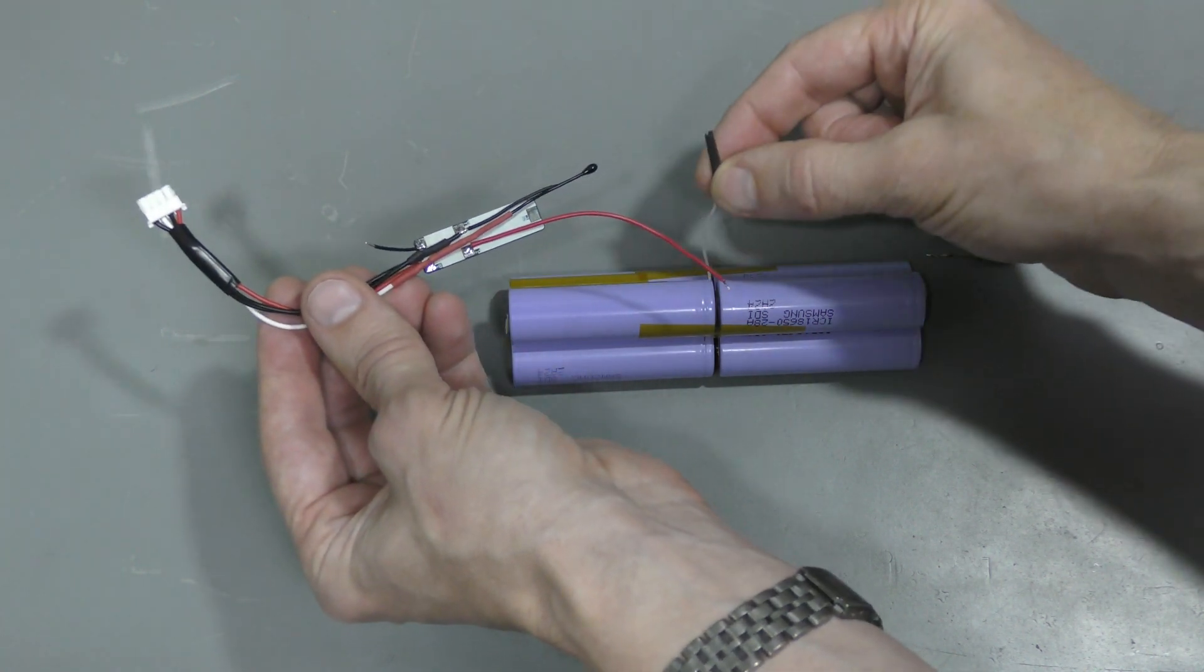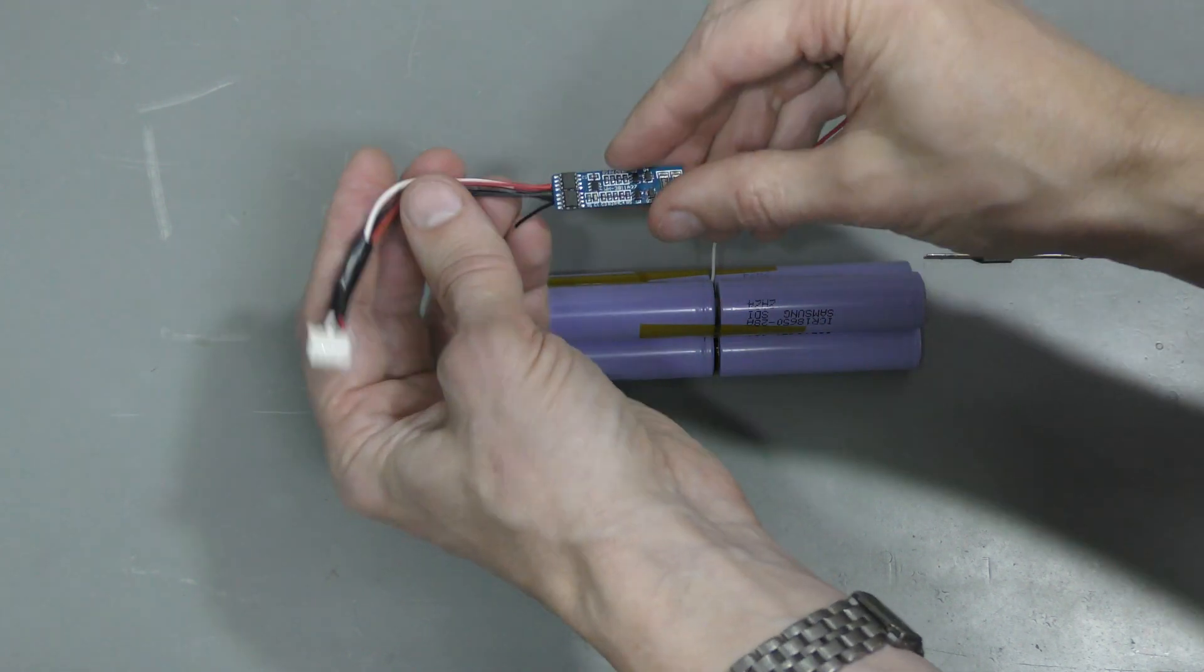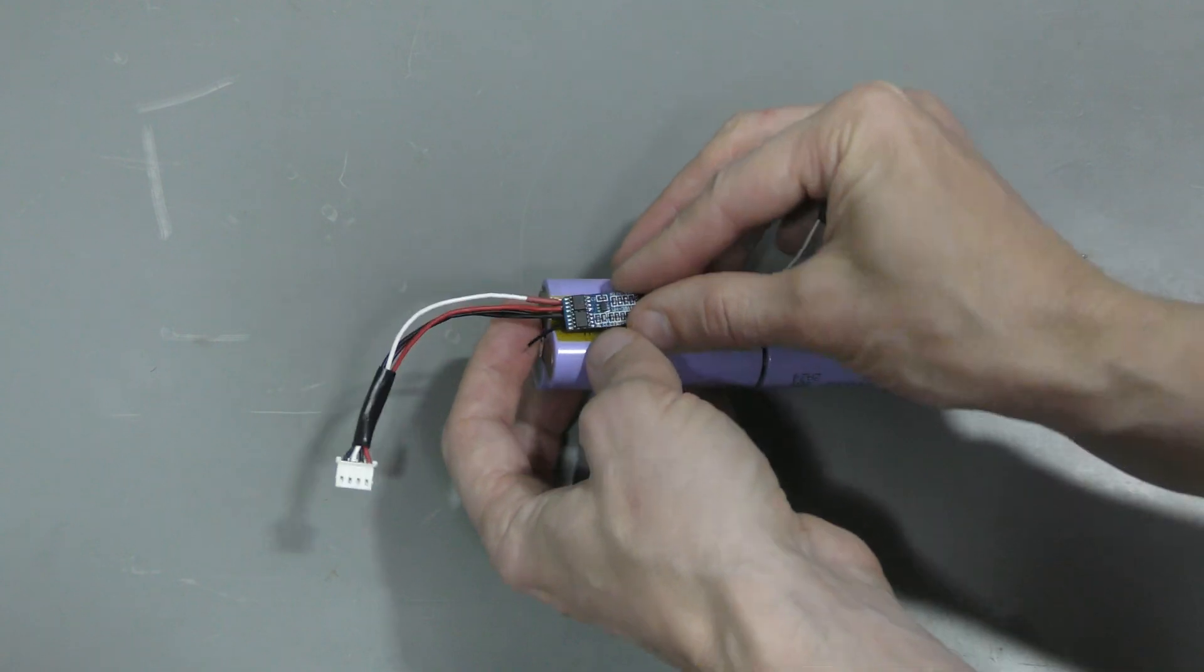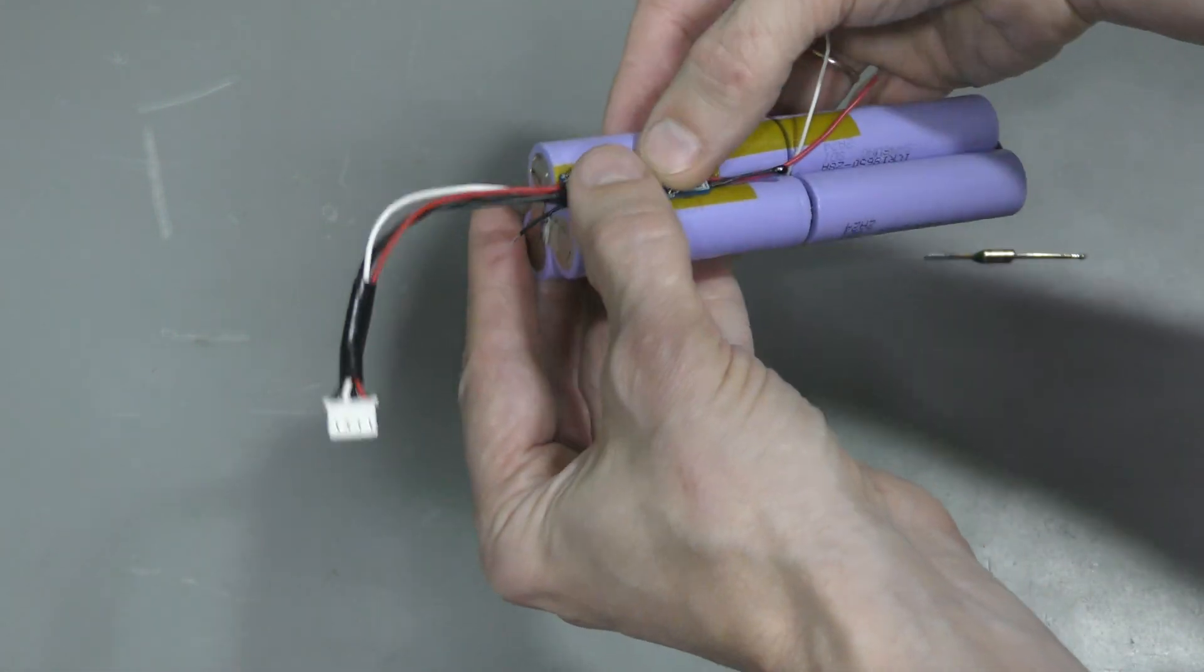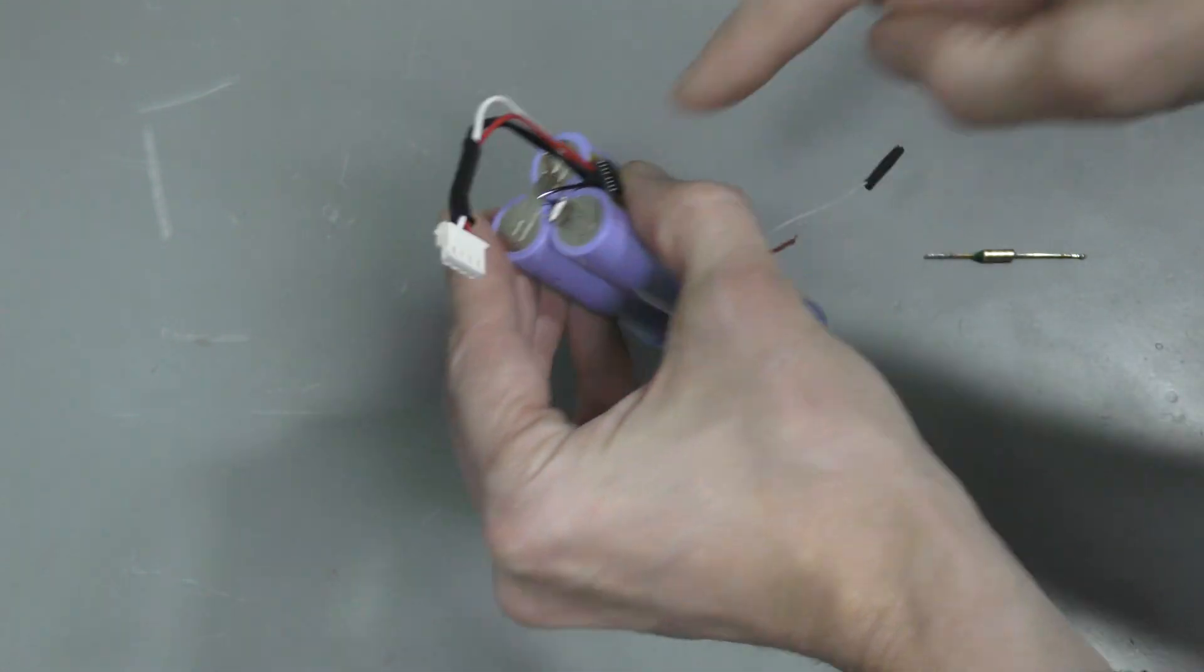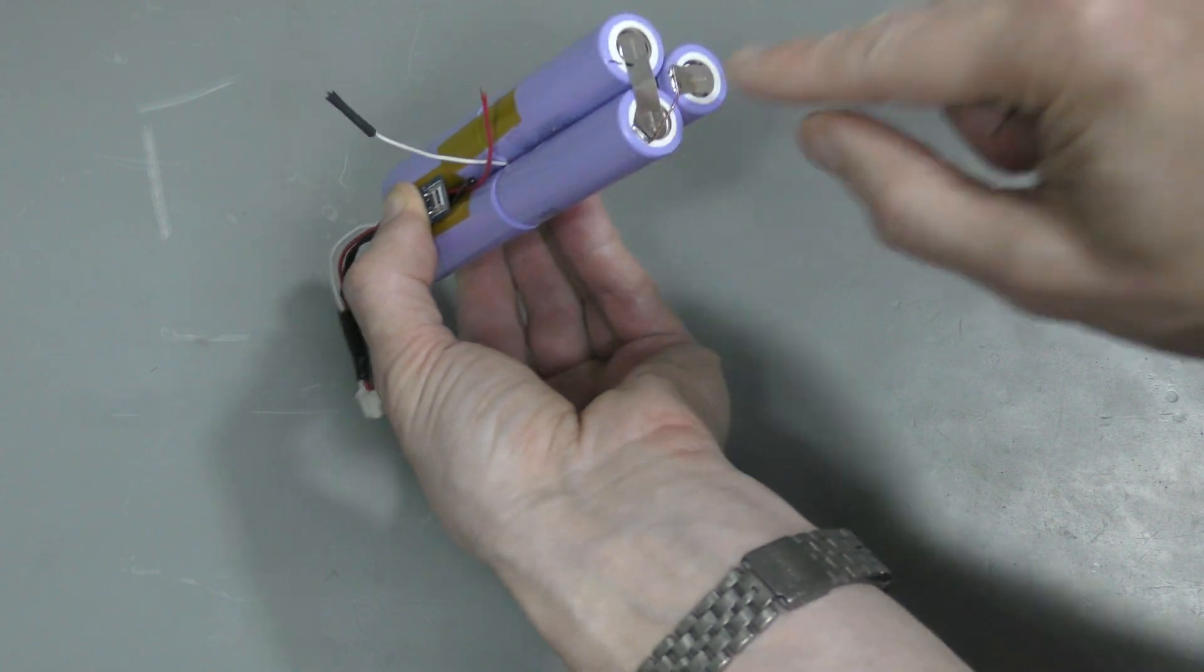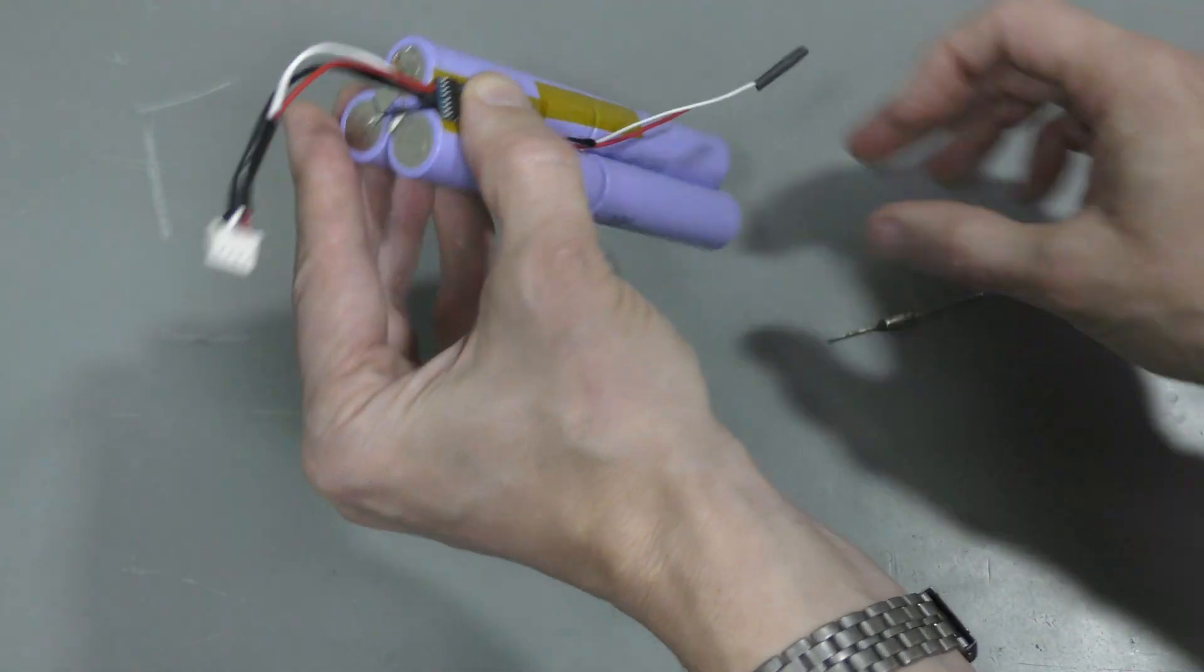This should sit right here and it looks great. The negative should go here. The positive should go to this side through this thermal fuse, and this should work perfectly fine.